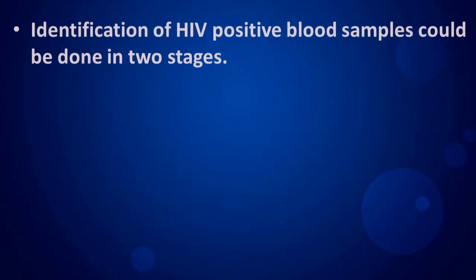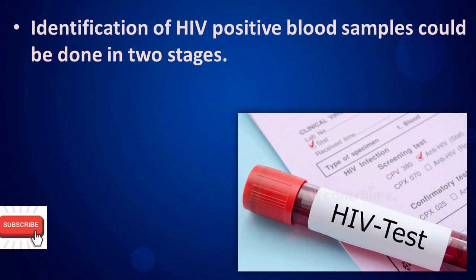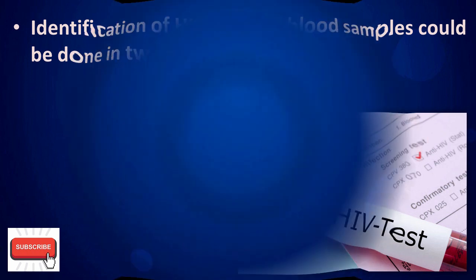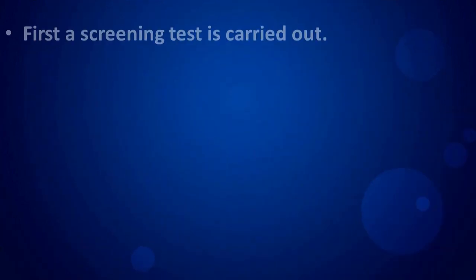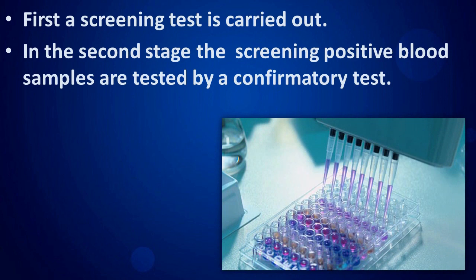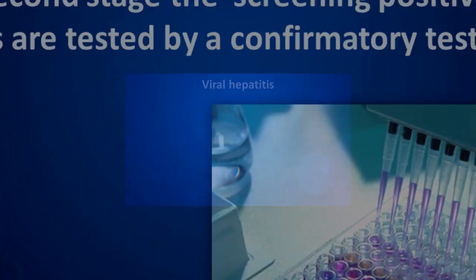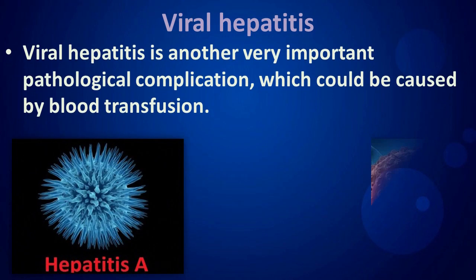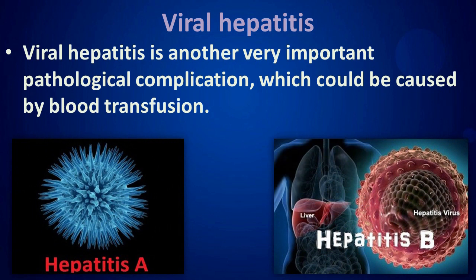HIV is a deadly disease that can be transmitted by transfusion through blood and blood components. Identification of HIV-positive blood samples is done in two stages. First, a screening test is carried out, and in the second stage, the screening-positive blood samples are tested by a confirmatory test.